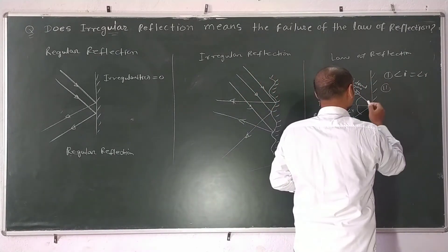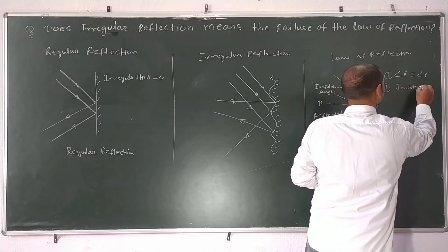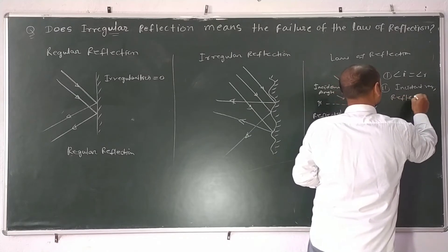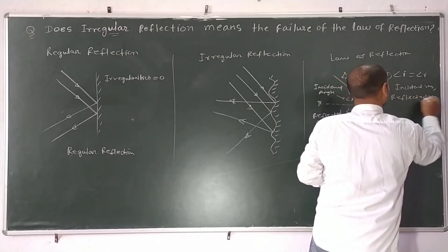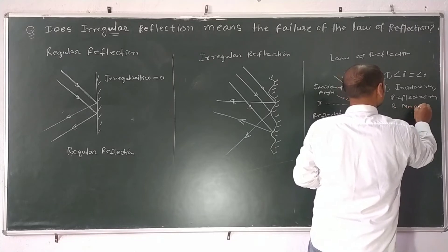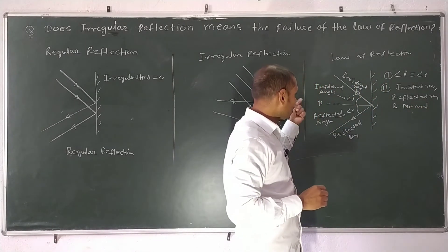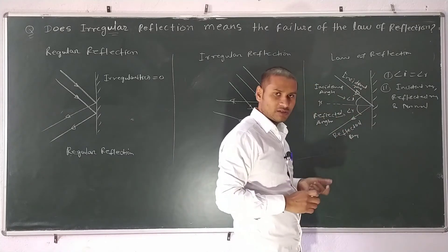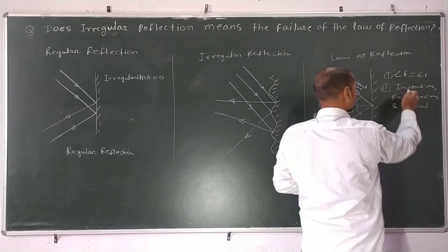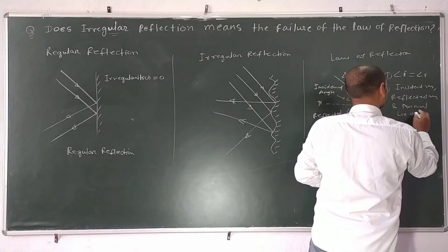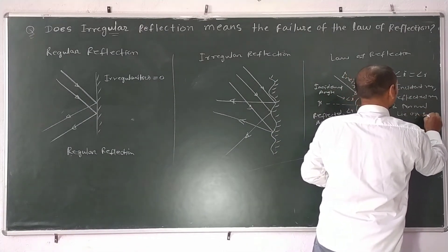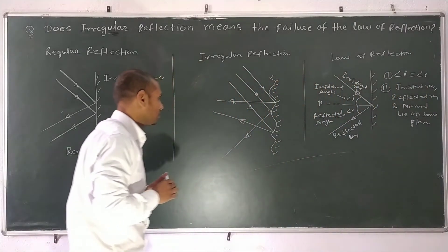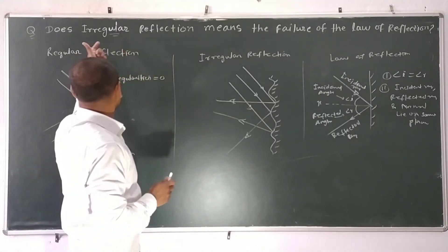The second law is that the incident ray, the reflected ray, and the normal — which is an imaginary line drawn perpendicular to the surface at the incident point — all lie on the same plane. This gives us the law of reflection.